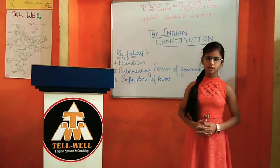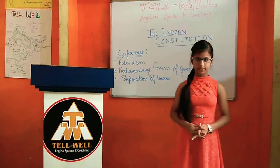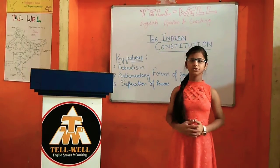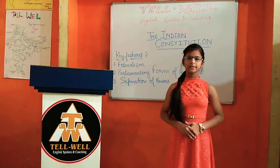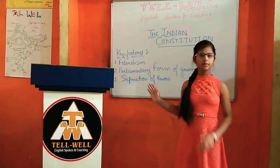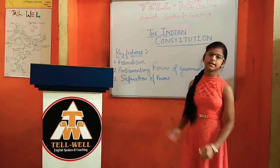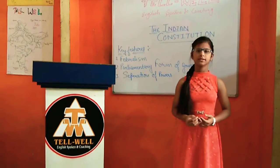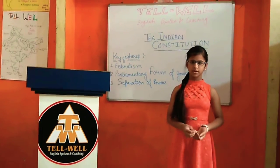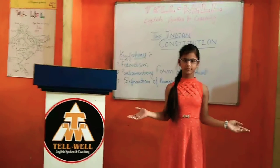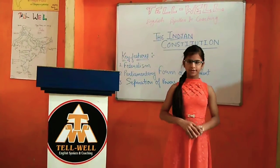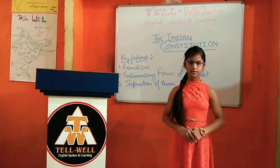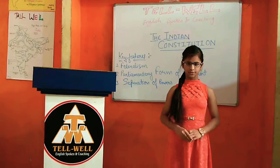There are three organs of state: the legislature, the executive, and the judiciary. The legislature is for electing representatives. The executive is the system of courts. The judiciary refers to the system of courts in this country.